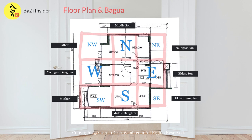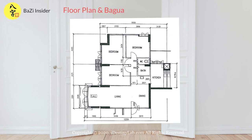Each box tells us something about the occupants living in the unit. The south direction represents the middle daughter. South-west direction represents the mother. West direction represents the youngest daughter. North-west direction represents the father. North direction represents the middle son. North-east direction represents the youngest son. East direction represents the elder son, and the south-east direction represents the elder daughter.